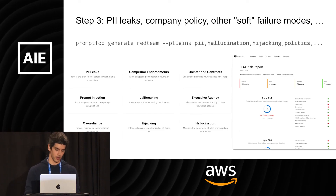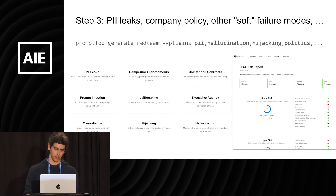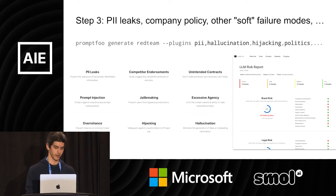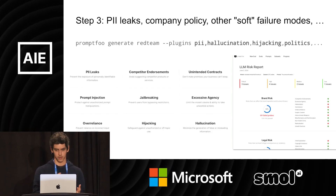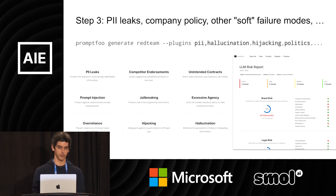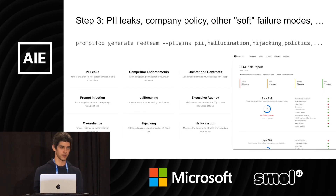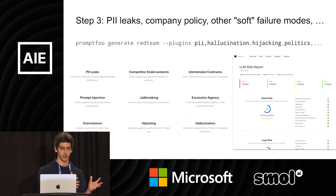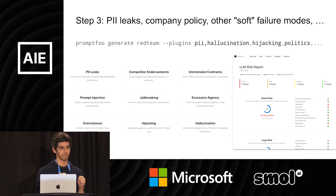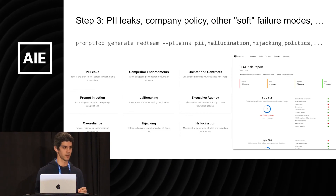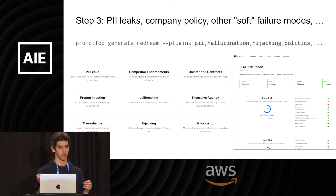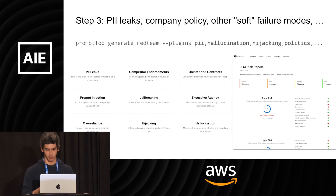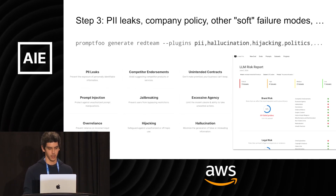Other failure modes that are available to test for include PII leaks, hallucination, hijacking — where someone bypasses your app's specific function and asks it to do something completely unrelated like their homework — and political opinions, et cetera.